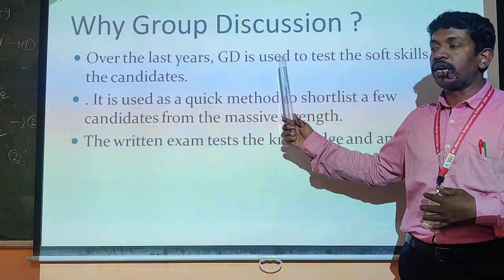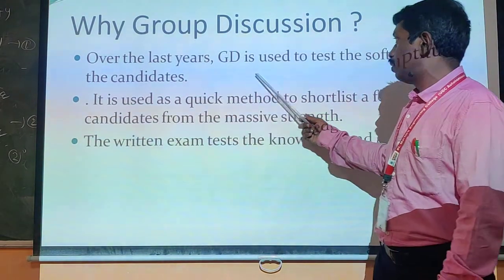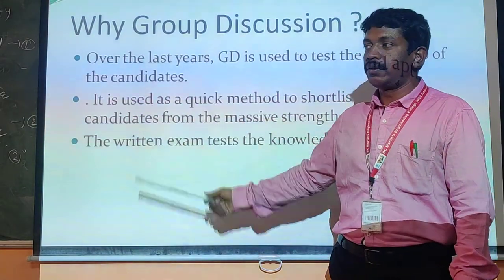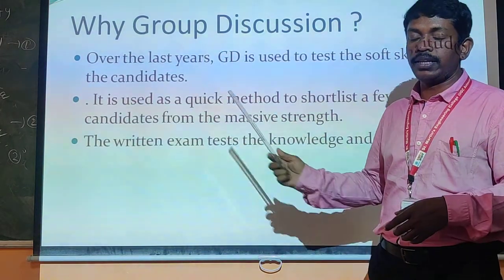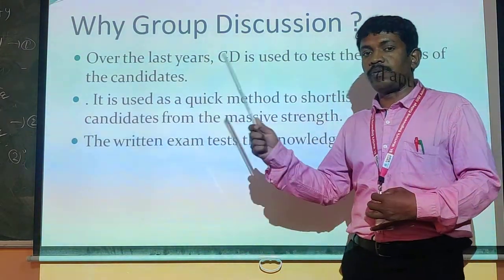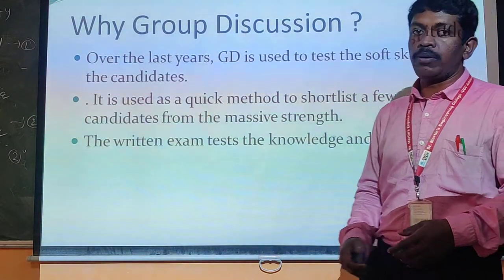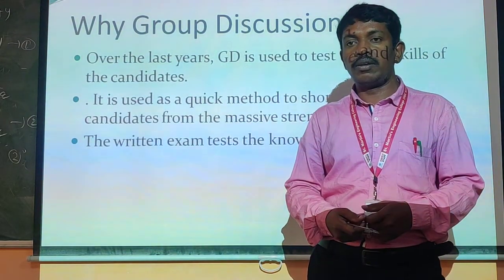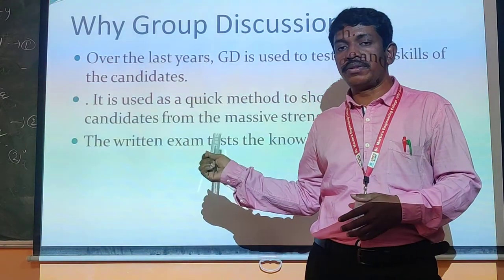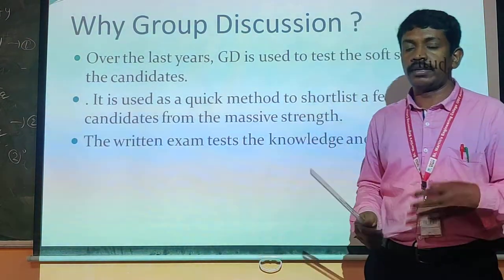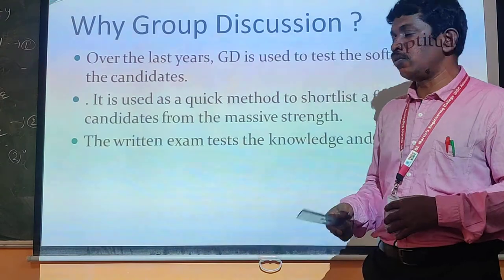Why is group discussion important? What is the importance of conducting group discussion? GD is used to test the skills of candidates in any organization. It is used as a quick method to shortlist a few candidates from the massive strength. Because these days there are many competitors, and a large number of applicants come in. In group discussion, they will test knowledge, subject knowledge, language skills, confidence level, and teamwork — all these skills to select the good candidate.